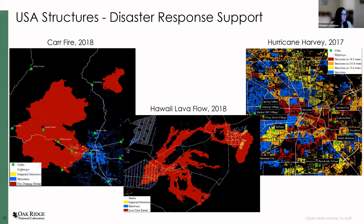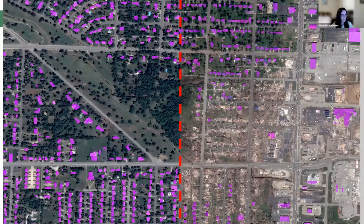Speaking of disaster response support, we've been able to support FEMA for several disasters over recent years. Here are three different examples: the Car Fire in 2018, the Hawaii lava flow in 2018, and Hurricane Harvey in 2017. That, to me, is what gets me up in the morning — being able to help people in real time. We actually stumbled upon damage assessment work by accident — that we may be able to give FEMA an idea of the extent of damage.